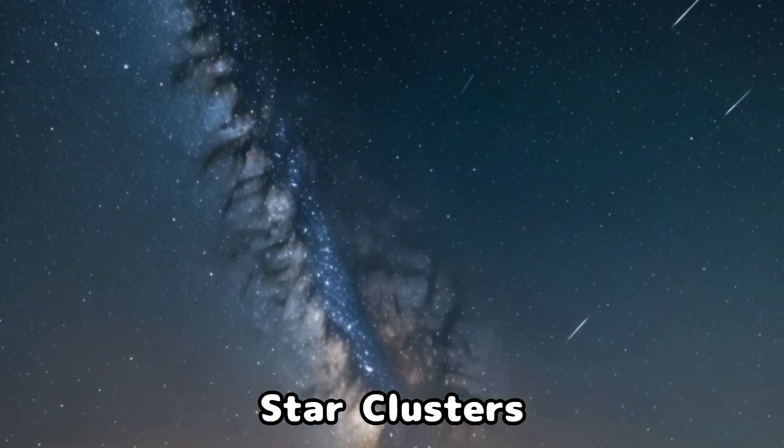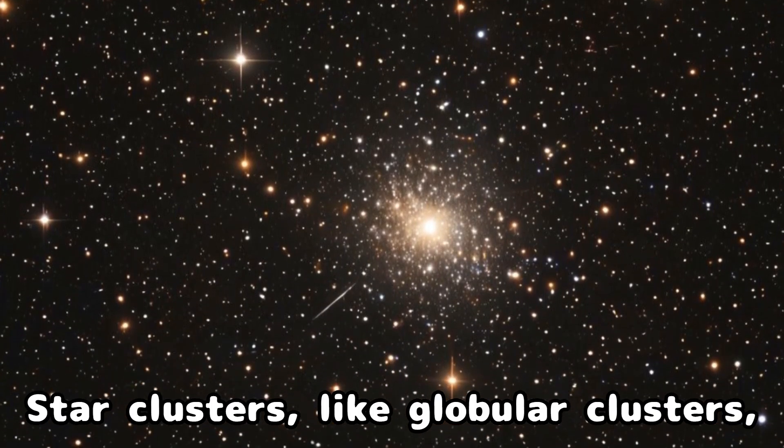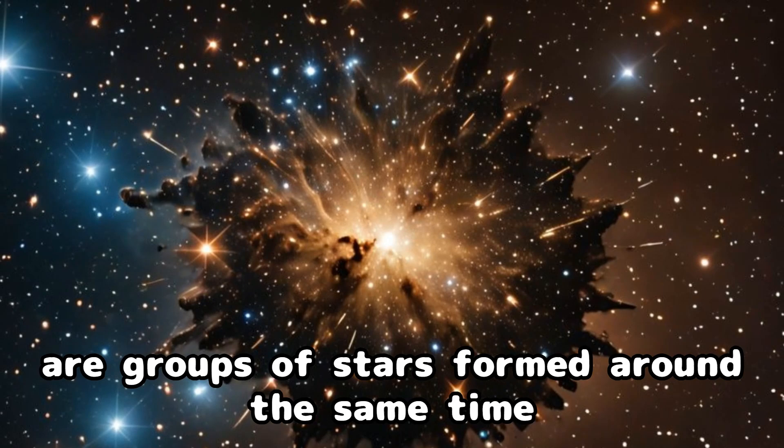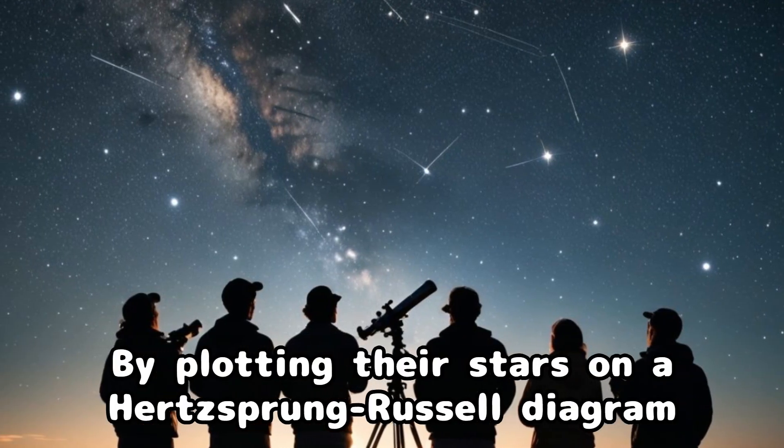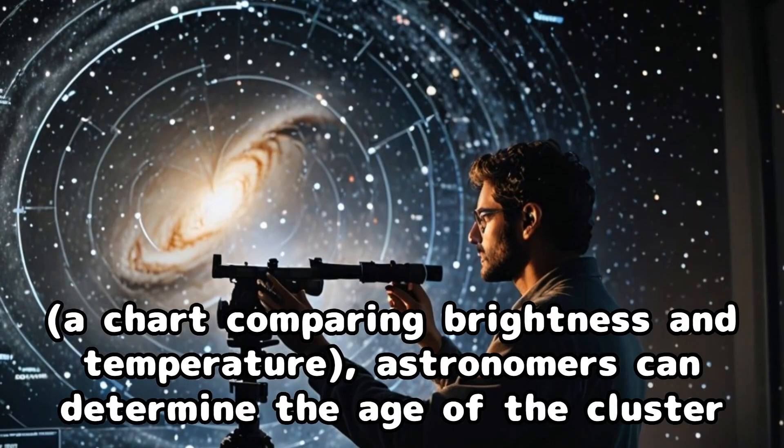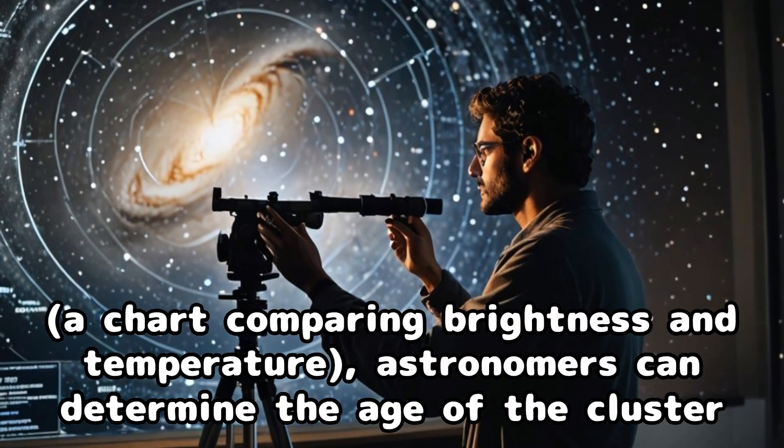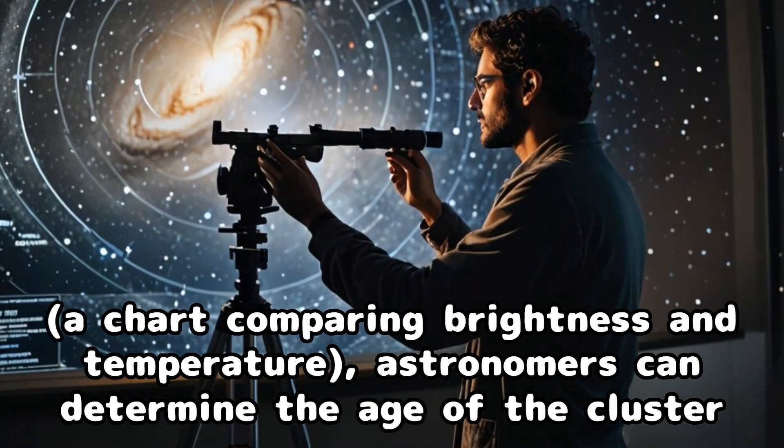Star clusters, like globular clusters, are groups of stars formed around the same time. By plotting their stars on a Hertzsprung-Russell diagram, a chart comparing brightness and temperature, astronomers can determine the age of the cluster.